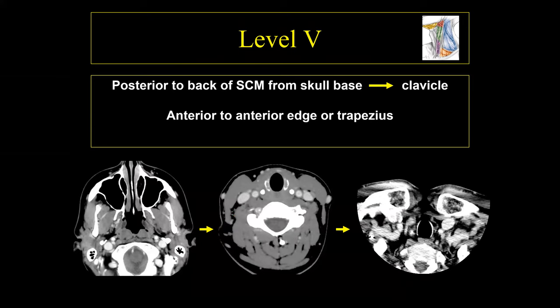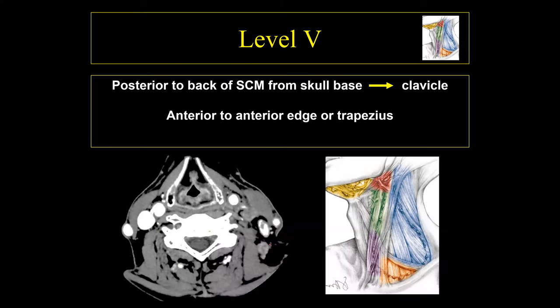Level 5 lymph nodes are geographically the largest area, running from the skull base all the way down to the base of the clavicles. Everything posterior to the back of the sternocleidomastoid muscle all the way to the trapezius muscle is level 5 — unlike levels 2, 3, and 4, level 5 is one large geographic area. A metastatic lymph node anterior to the sternocleidomastoid line could be level 3 (below hyoid, above cricoid), while posterior to that line it is level 5.